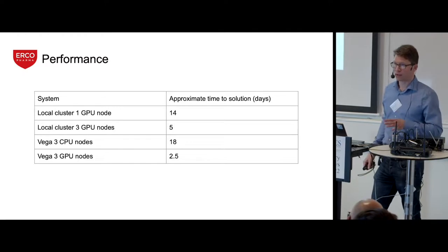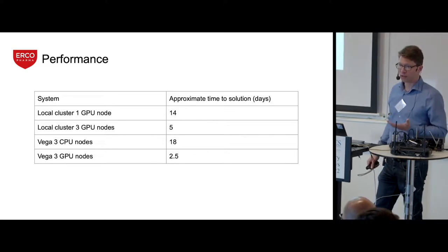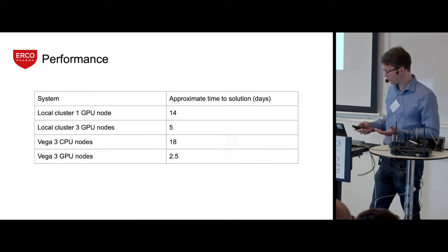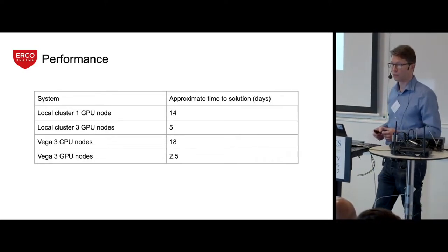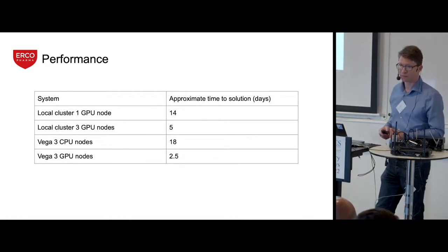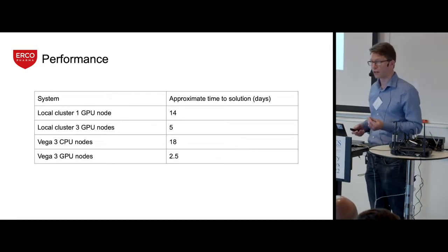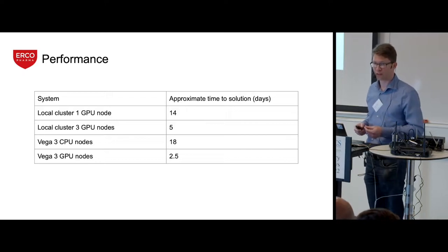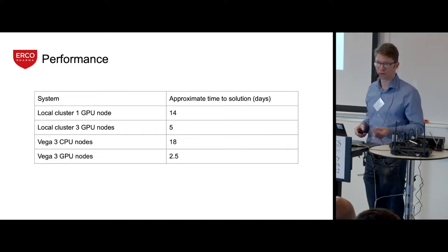Just a comparison of why it's interesting to use HPC systems: mainly if we look at the time from question to answer. Using three of our own nodes we can get the time down to five days, whereas on Vega we can get it down to two and a half days. This is for one set of simulations, and we try to run four in combination to get better statistics — so it's quite compute intensive and we want to get the time from question to answer down as much as possible.